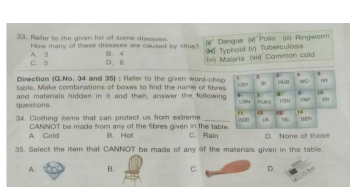Question 33. Refer to the given list of some diseases. How many of these diseases are caused by virus? The correct answer is option A: three. Dengue, polio, and common cold are spread through virus.